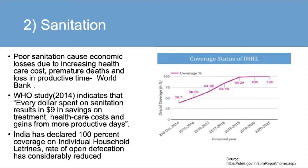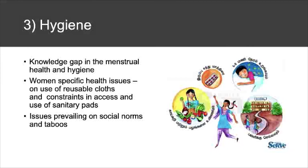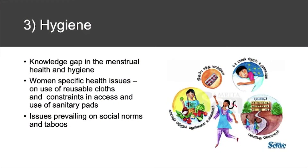The third element — hygiene — also needs focus. The main issues in hygiene relate to menstrual hygiene, which affects adolescent girls and women of productive age. We need to be concerned about health issues related to management of hygiene practices at the household level, and social norms that affect practices promoting better hygiene at the local level. Key issues in menstrual hygiene include knowledge gaps on the use of safe sanitary pads and their affordability, as well as social taboos. Apart from this, food hygiene and environmental hygiene practices are crucial in maintaining health.